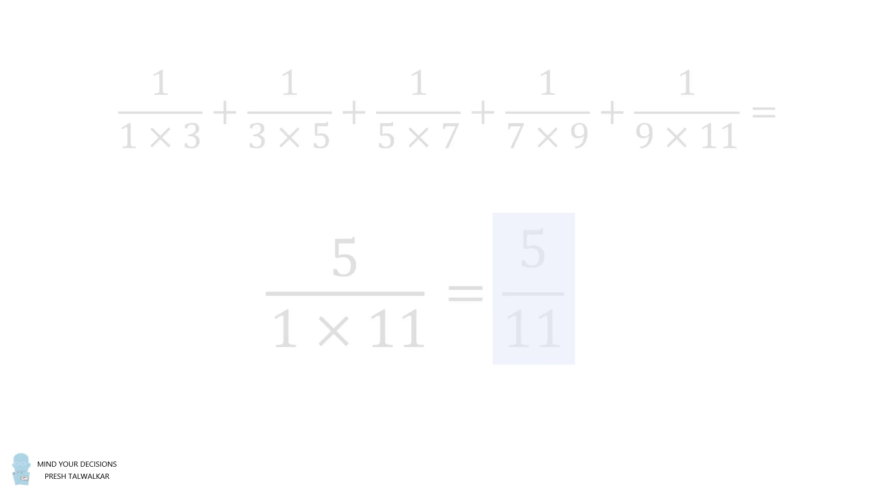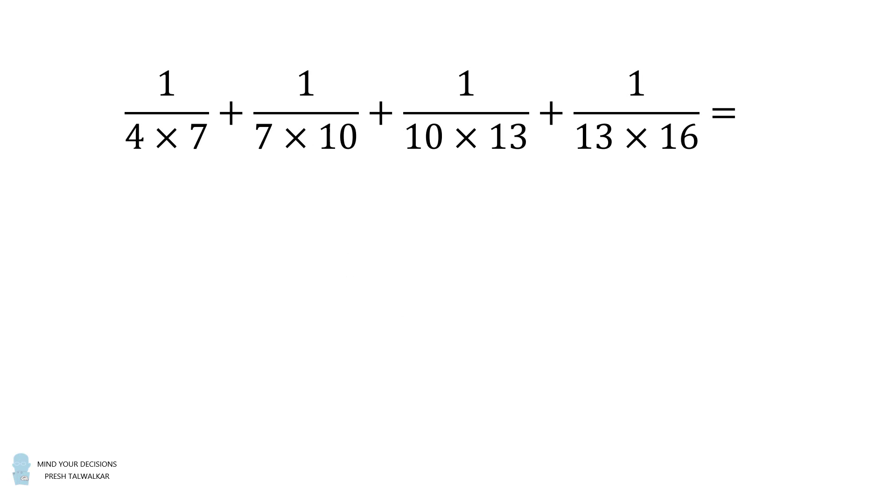Let's use this technique to solve the second problem. In this example, we count the number of terms in the sum. There are four terms. We then divide by the very first factor in the denominator, that's 4, and multiply by the very last factor in the last fraction, that's 16. So we have 4 divided by 4 times 16. We cancel out the 4s and we get 1 over 16, and that's the answer to this sum.